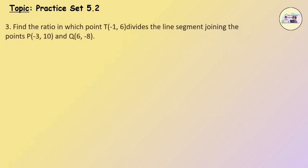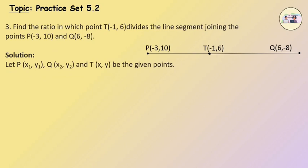Question No. 3: Find the ratio in which point T(−1, 6) divides the line segment joining the points P(−3, 10) and Q(6, −8). Let P be (x1, y1), Q be (x2, y2), and T be (x, y). Here x1 = −3, y1 = 10, x2 = 6, y2 = −8, x = −1, y = 6.